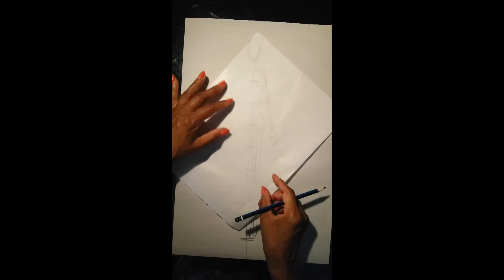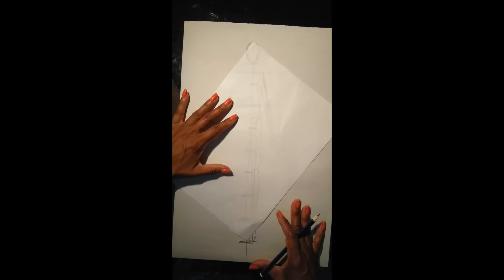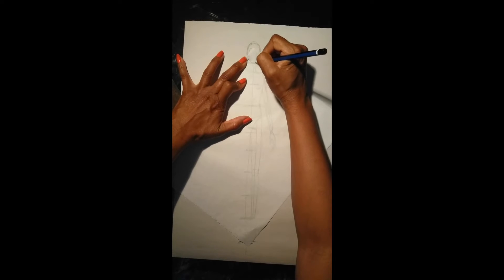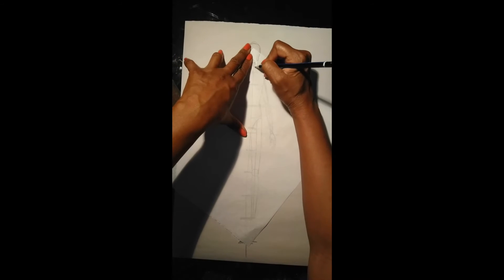Now we're just going to grab some tracing paper and we are going to trace this croquis. And the reason we are using tracing paper is because we can see through it, so I'm simply going to trace this croquis and then I'll fold the paper and trace the second side.